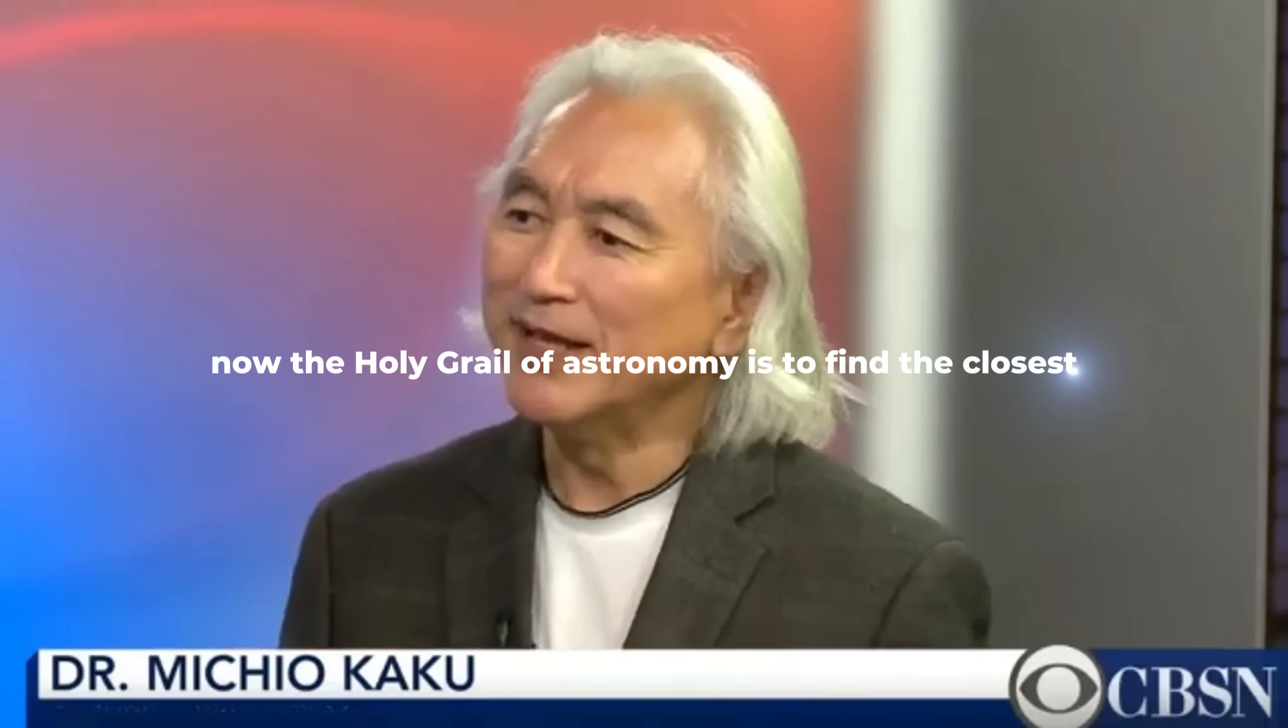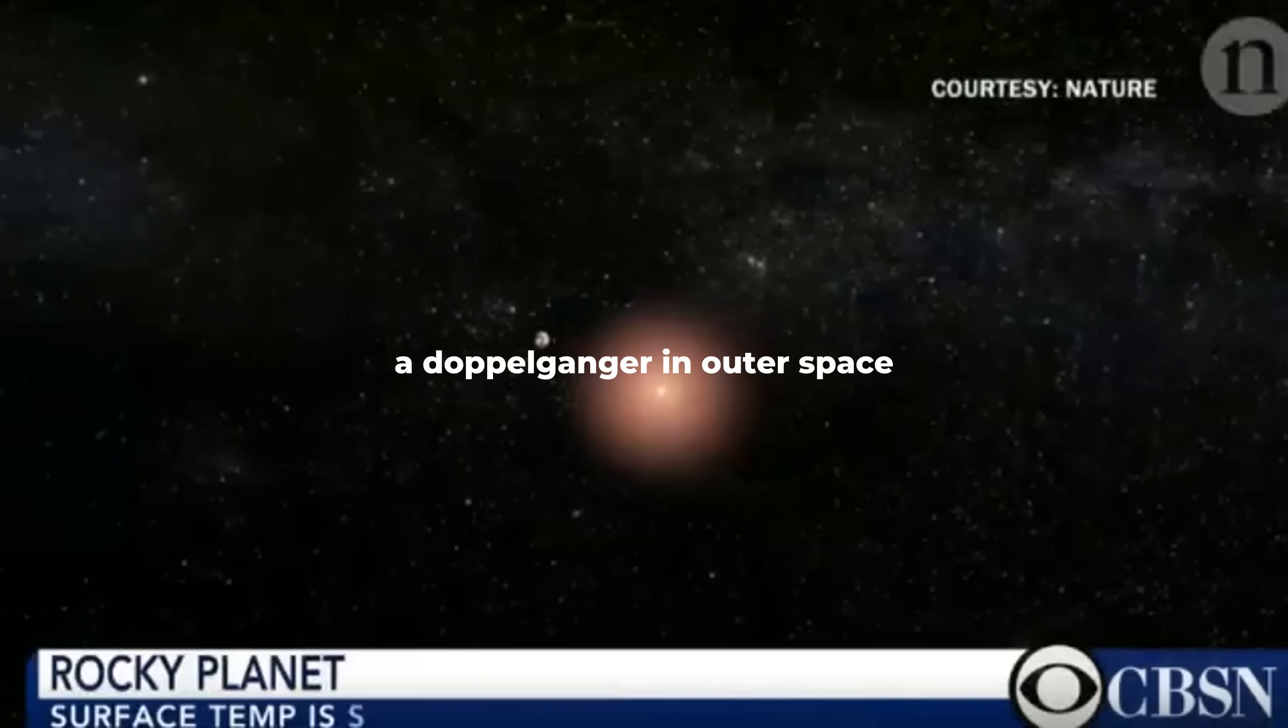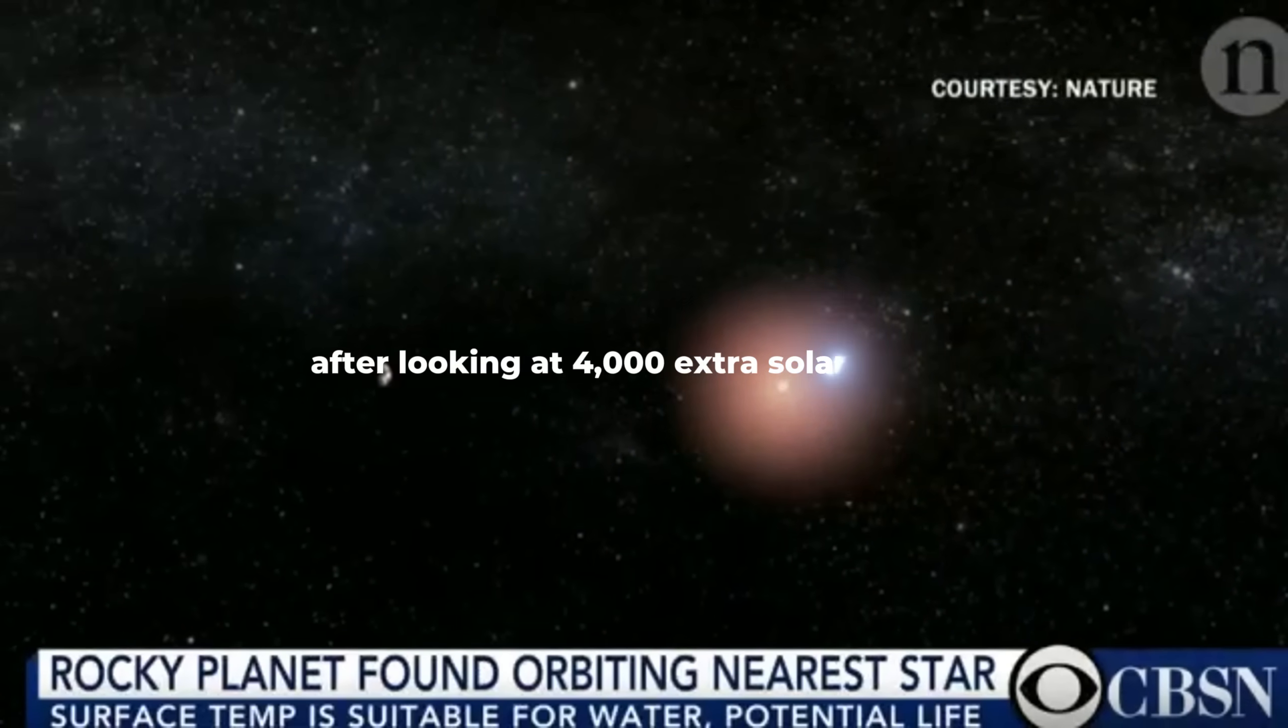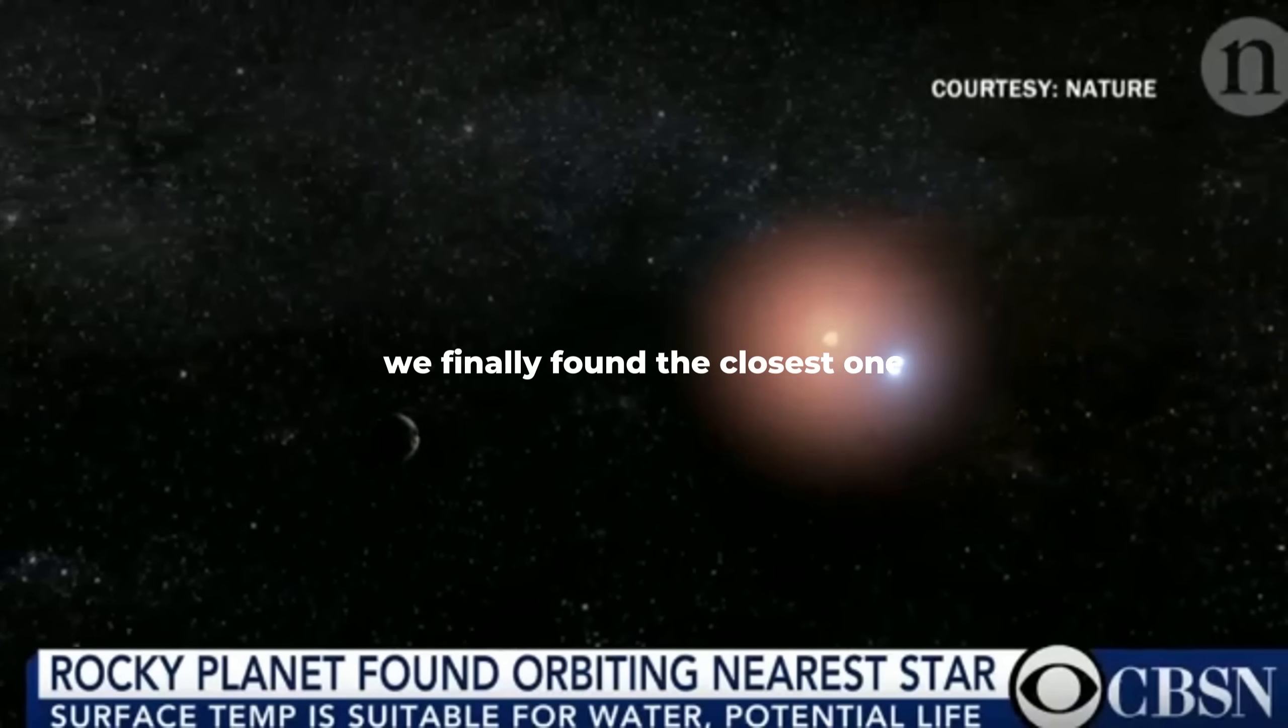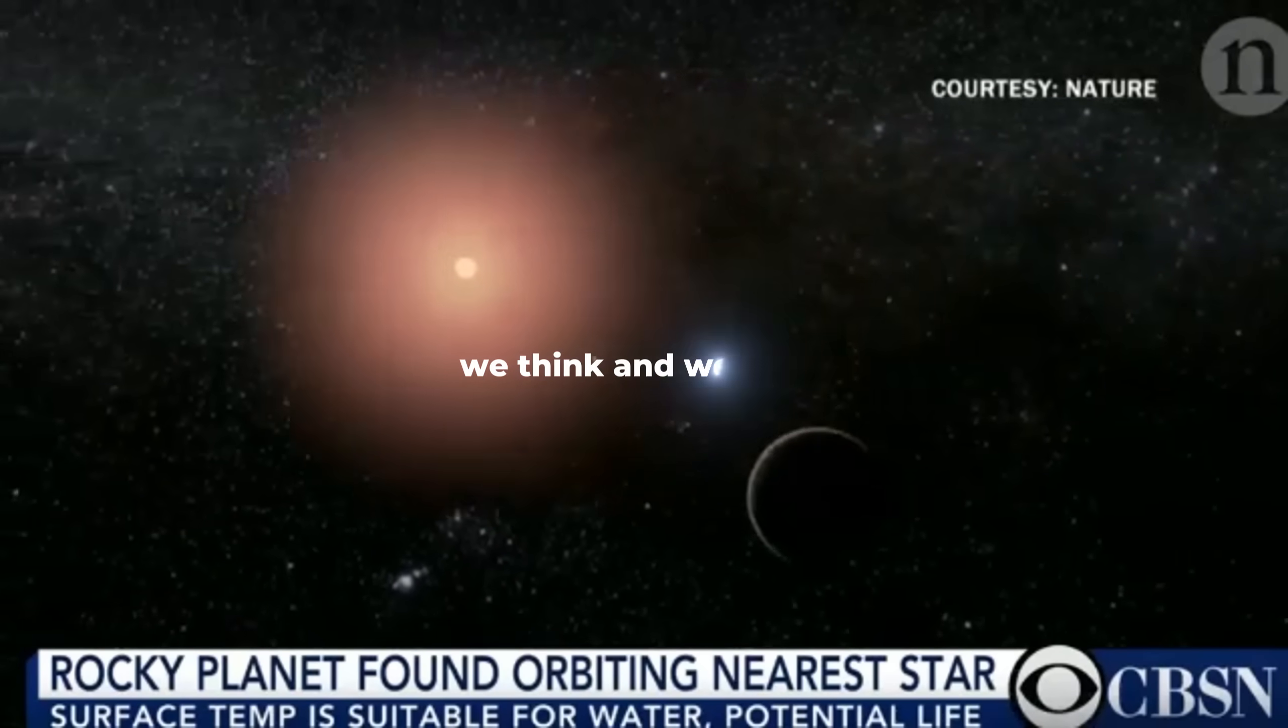The holy grail of astronomy is to find the closest Earth-like twin, a doppelganger in outer space. And now we've nailed it. After looking at 4,000 extrasolar planets, we finally found the closest one that looks very similar to the planet Earth, we think.